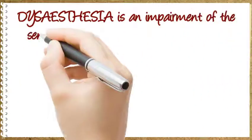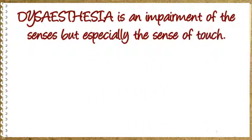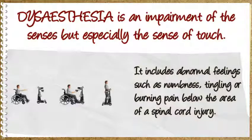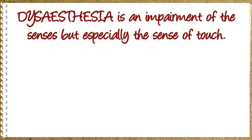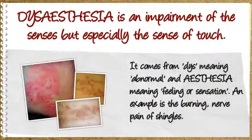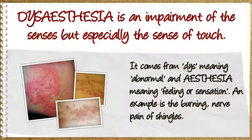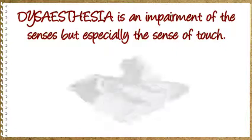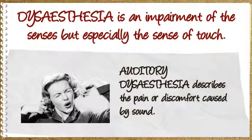Dysesthesia is an impairment of the senses, but especially the sense of touch. It includes abnormal feelings such as numbness, tingling, or burning pain below the area of a spinal cord injury. It comes from dys meaning abnormal and esthesia meaning feeling or sensation. An example is the burning nerve pain of shingles. Auditory dysesthesia describes the pain or discomfort caused by sound.